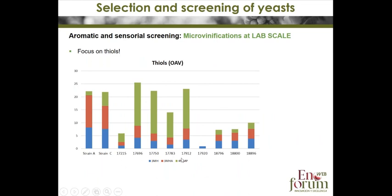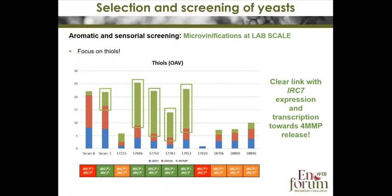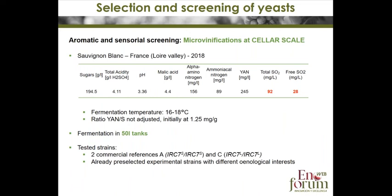Focusing on thiols, we can see the best results for 4-MMP release were found for wines made with four strains and one reference strain. These are the strains that have IRC7 long form — in both alleles. There is a clear link between IRC7 expression and transcription towards 4-MMP release.